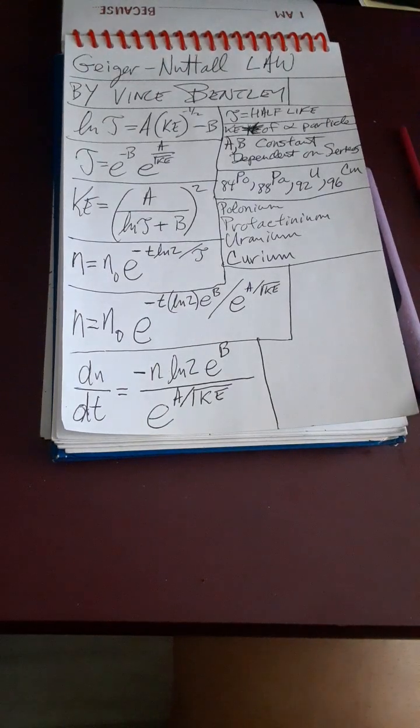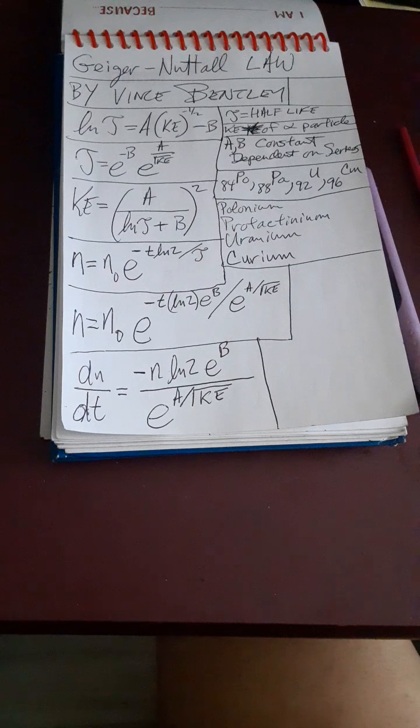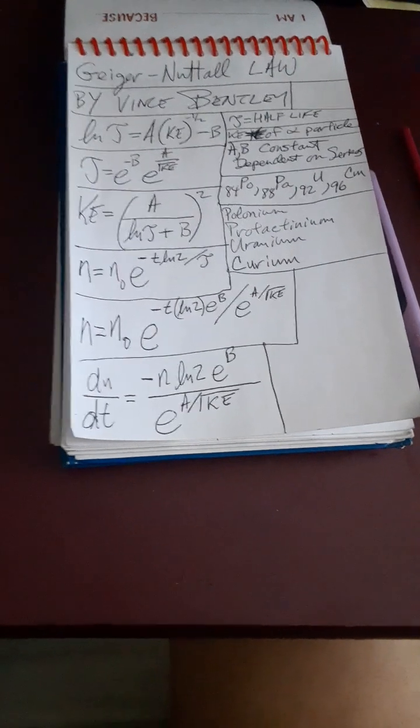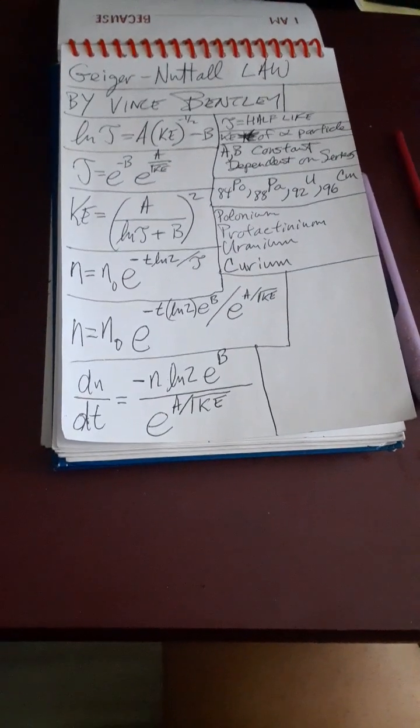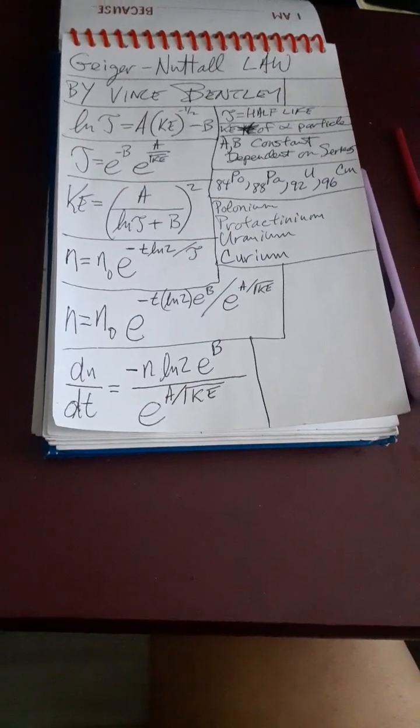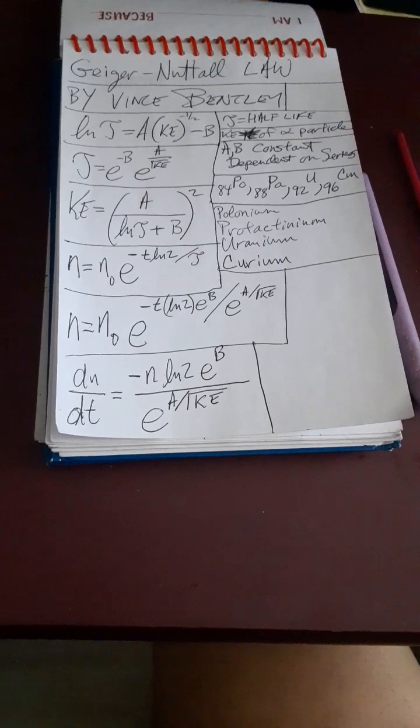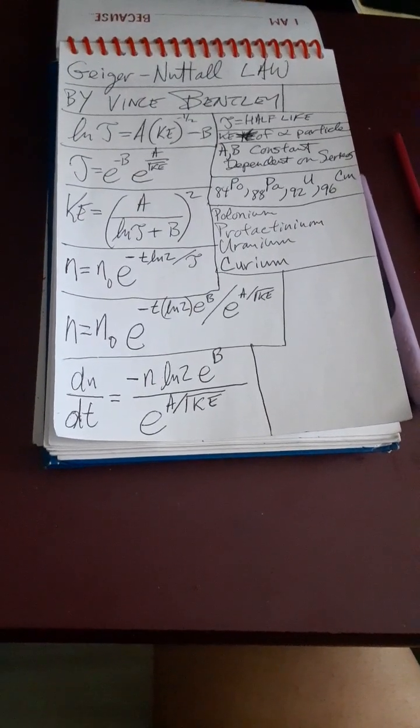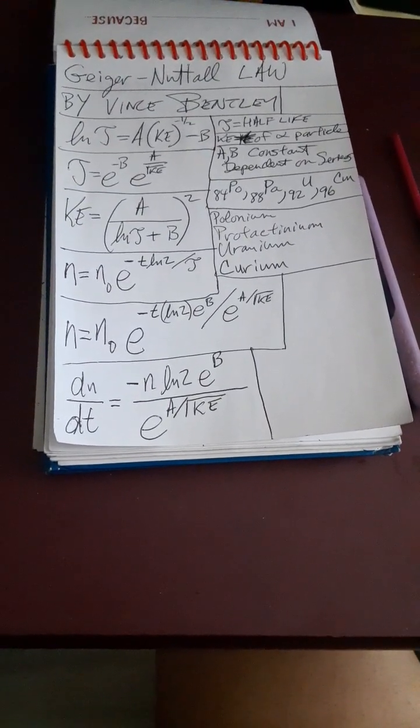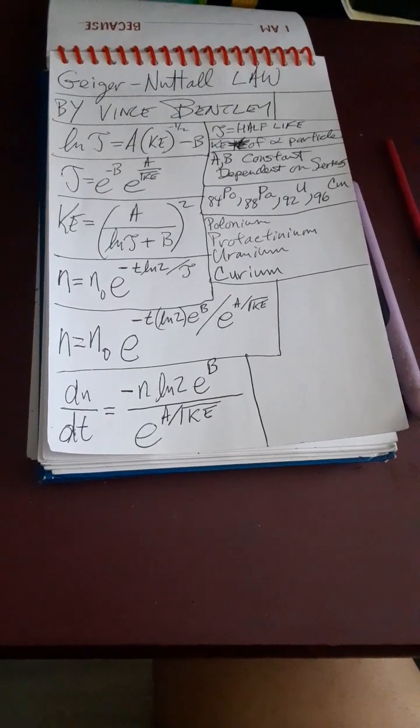So I just wanted to discuss the Geiger-Nuttall law, which actually sometimes in old books it used to be quite prevalent in the nuclear physics text. Nowadays it's a little bit tougher to find, but you can find it out there if you want to type it up and learn something more about it. Thank you for watching the video. I look forward to any of the comments at the bottom and have a good night.